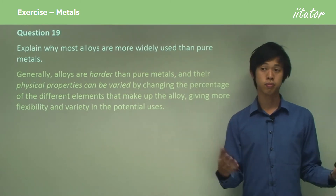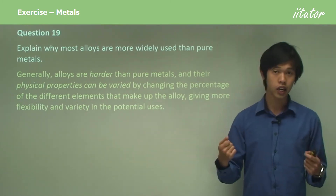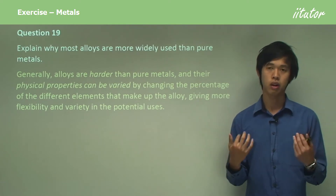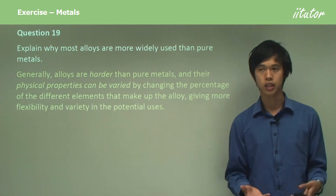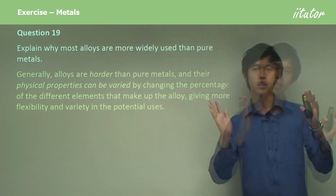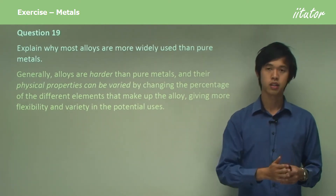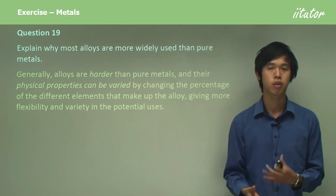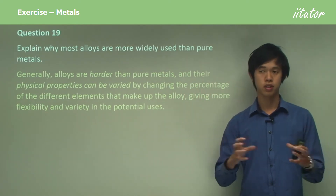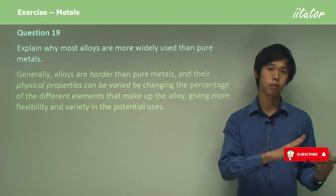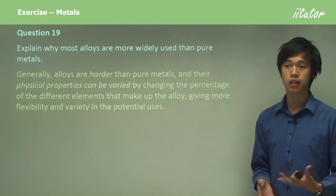For instance, let's take steel. If you put too much carbon in it, it will be very hard, but also quite brittle, so it will be much less useful in a structural context where things need a bit of give. Whereas if you reduce the carbon content, it will become more malleable, but it won't be as hard. So you can change the physical properties of steel just by varying how much carbon you put in it. The same applies to many other types of alloys.